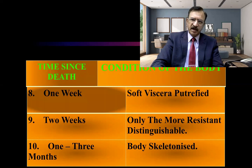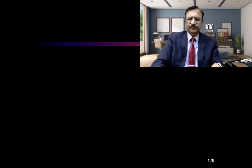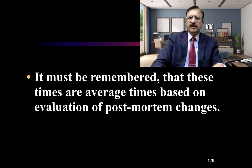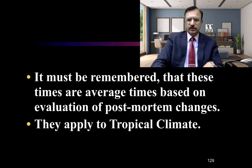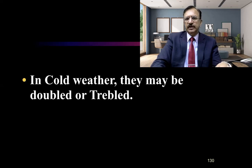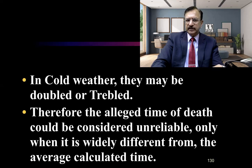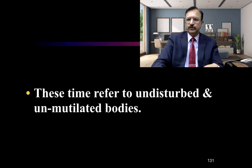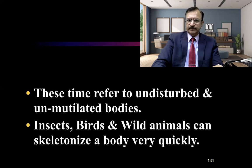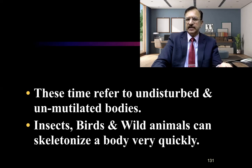We observe which state the changes are in and then give the time bracket of the post-mortem time. It must be remembered that these changes are average time-based, and evaluation of post-mortem interval will be dependent upon certain factors which can modify the appearance. These times are applicable in tropical climates; in cold weather they may be doubled or tripled because of falling temperature. Therefore, the alleged time of death would be considered unreliable only when it is widely different from the average calculated time. These times refer to undisturbed and unmutilated bodies, because insects, birds, and wild animals — if the body is lying in an exposed environment — can skeletonize a body more quickly.